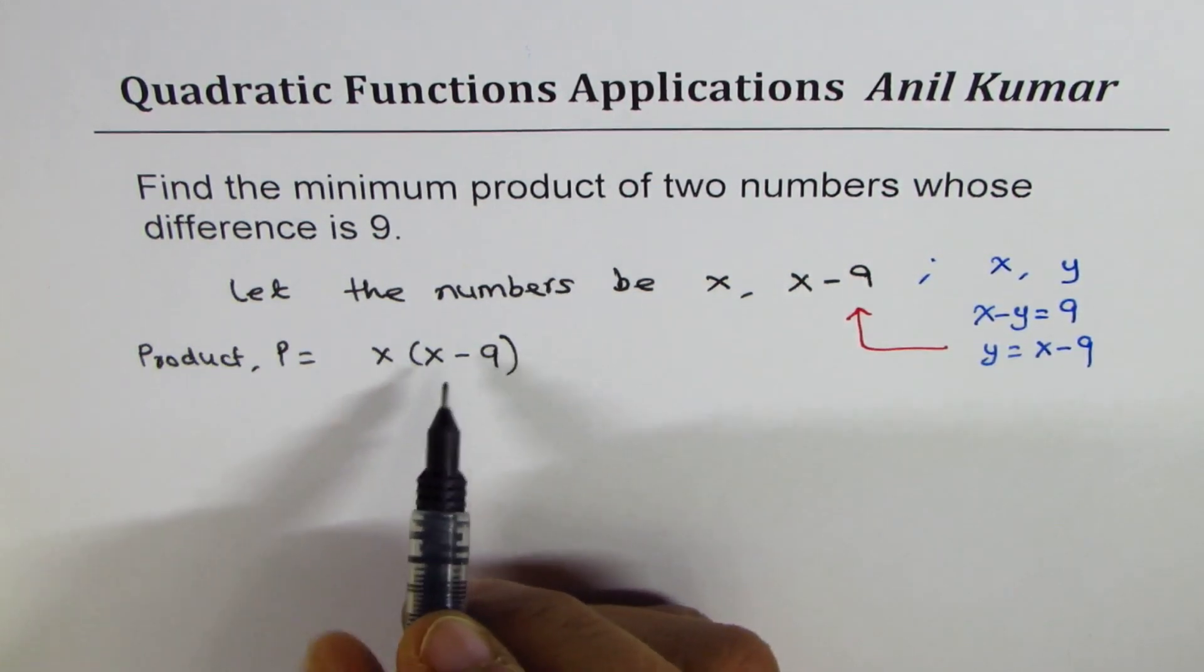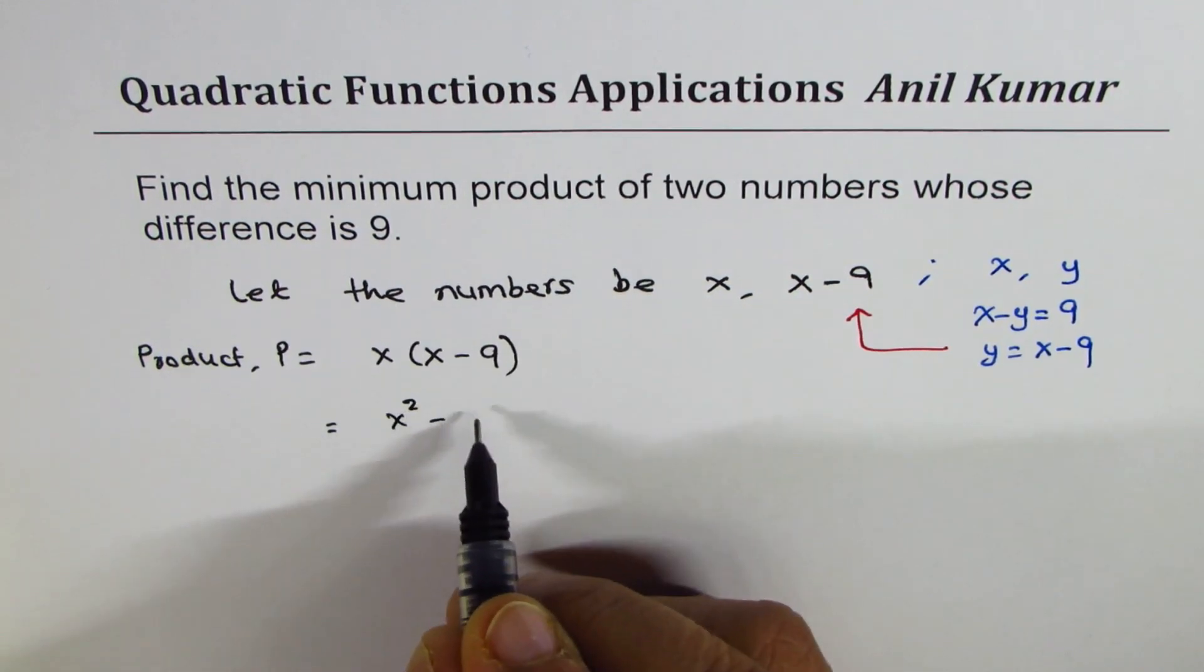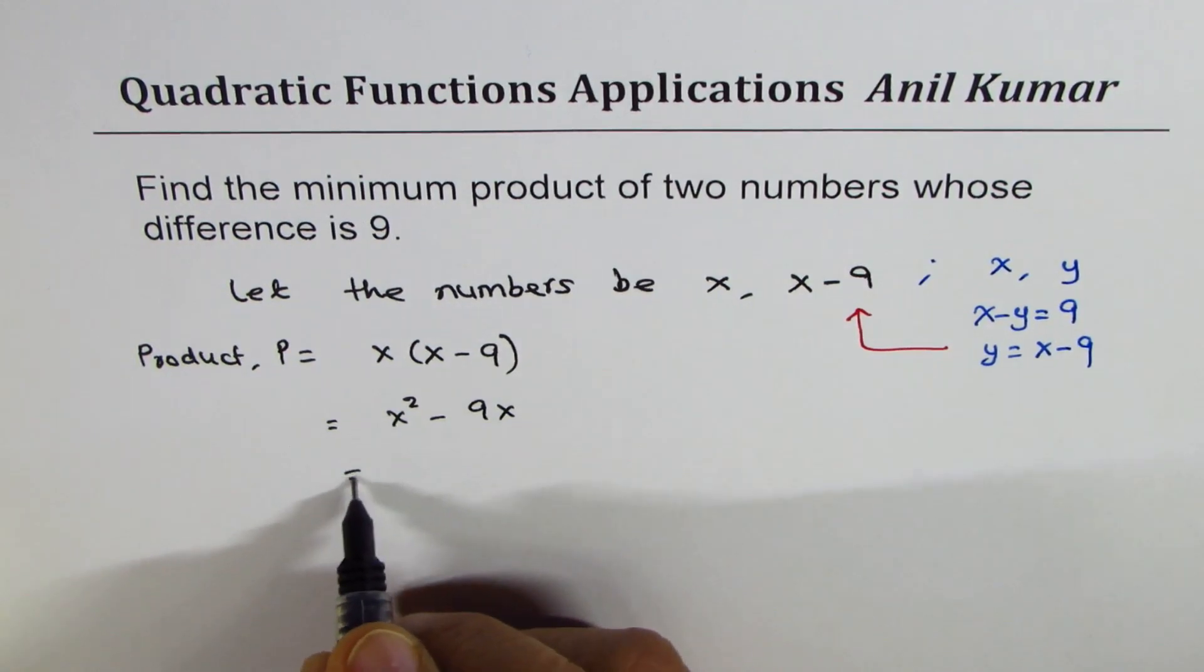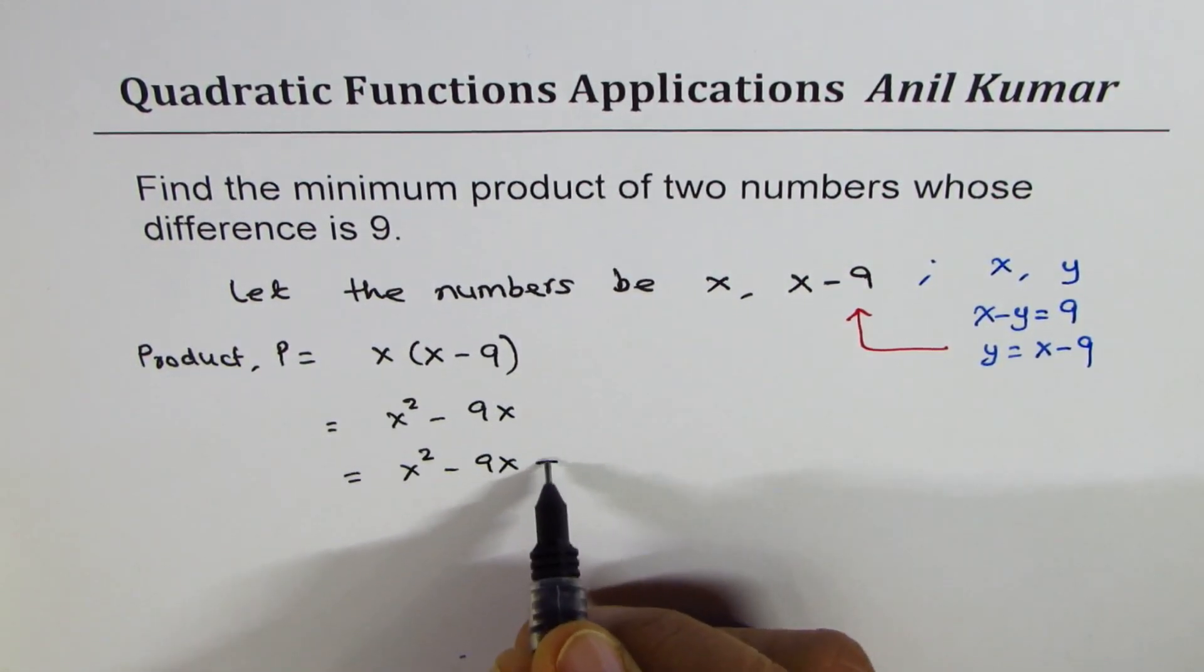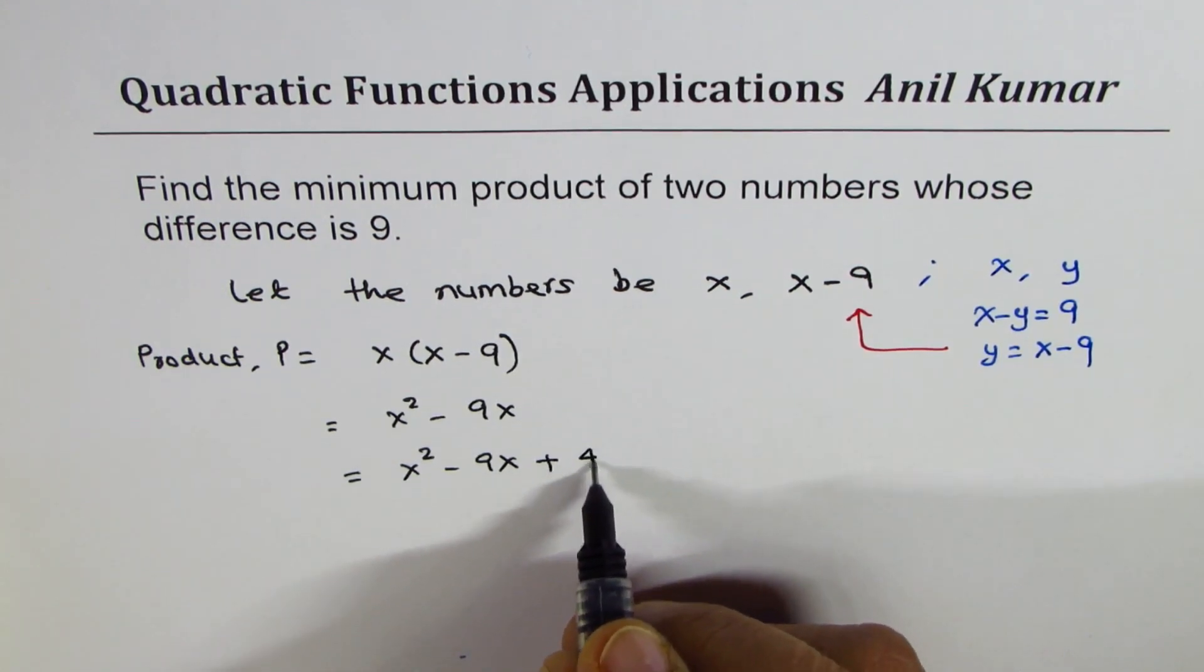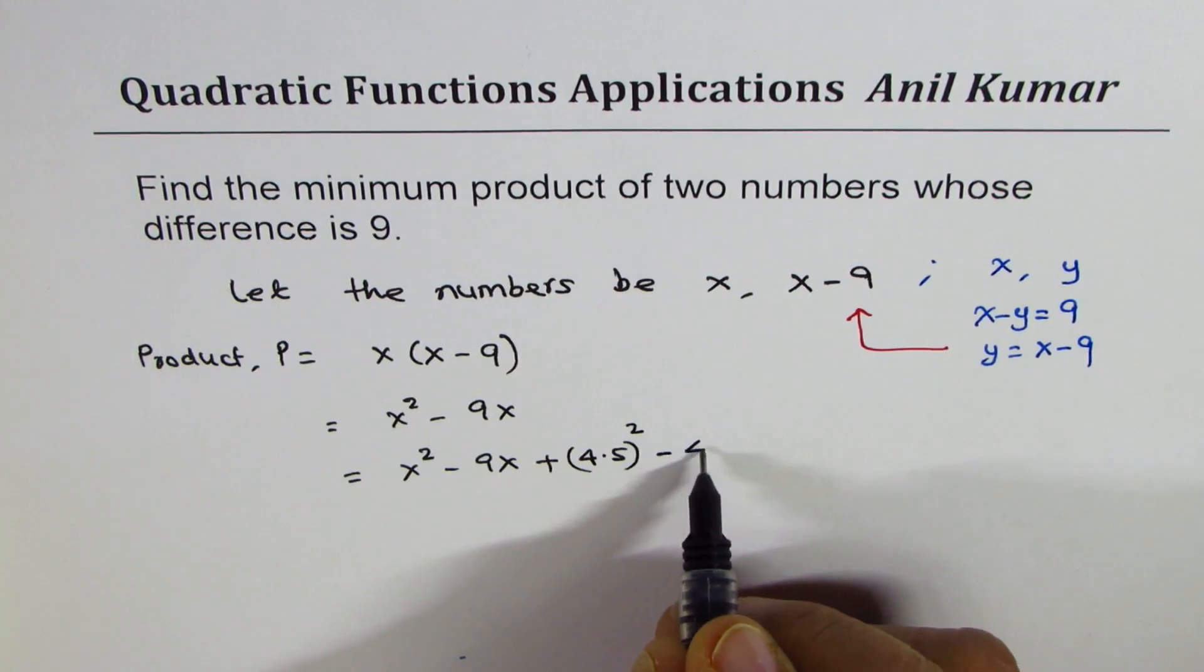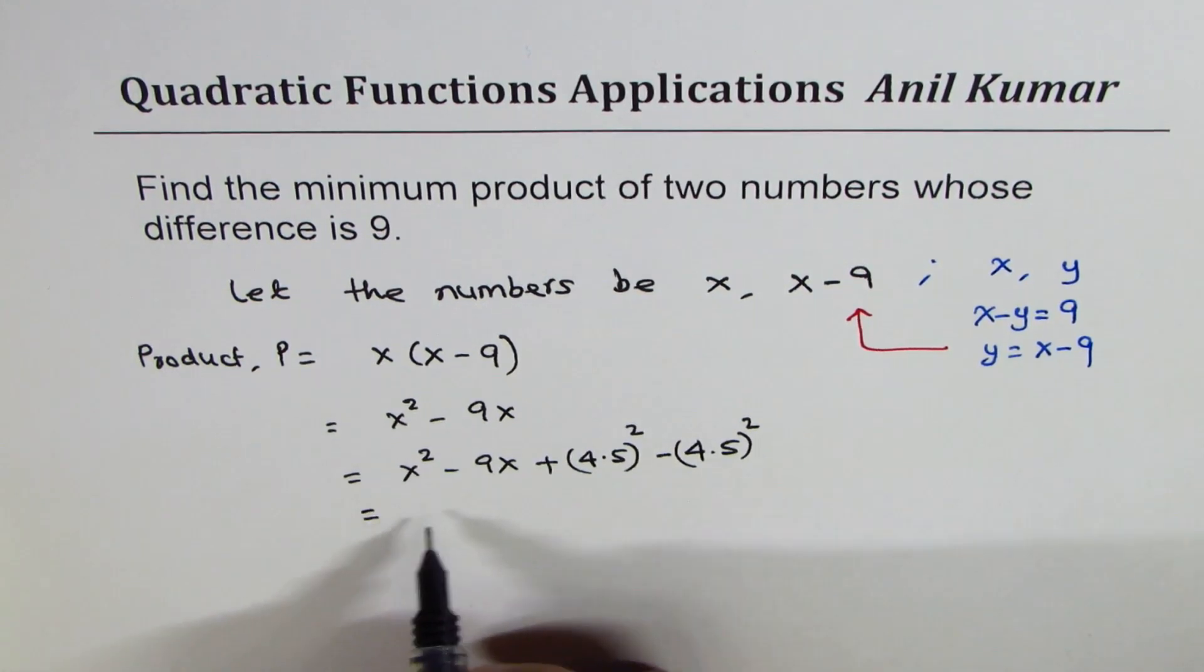Now there are a couple of ways of solving this. You could actually expand this, you get X square minus 9X and do completing the squares. So if you complete the squares, you have X square minus 9X plus half of nine is 4.5, so 4.5 square minus 4.5 square.